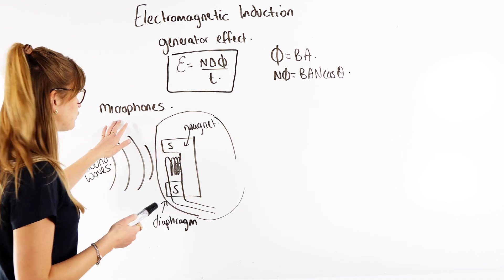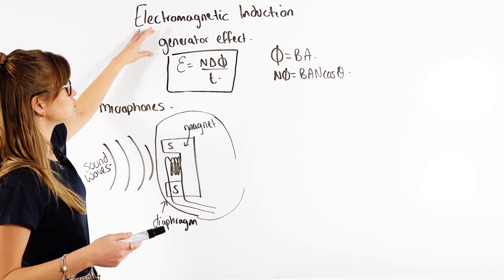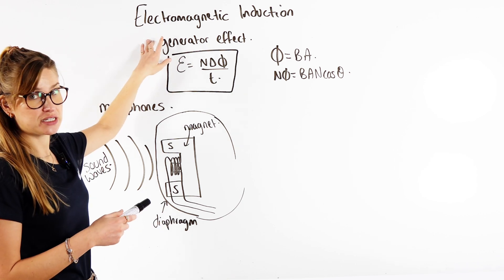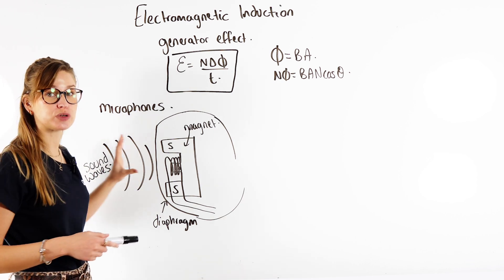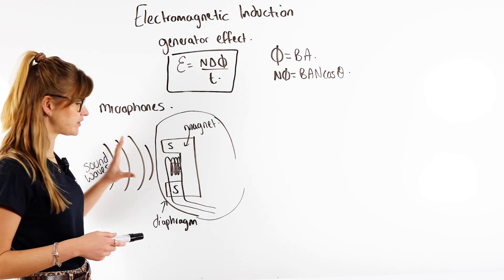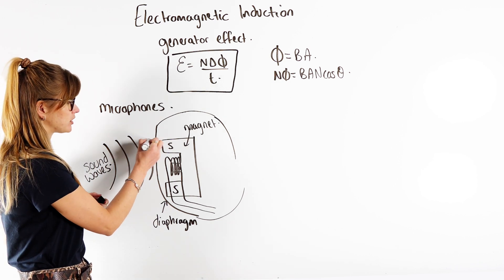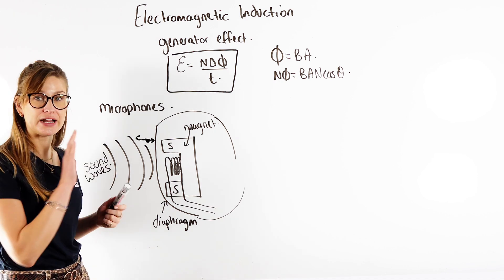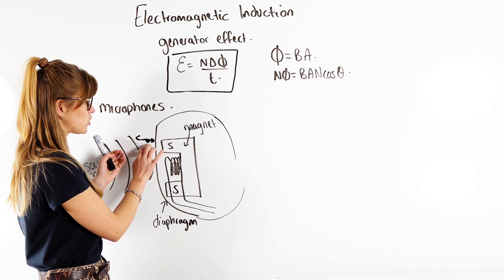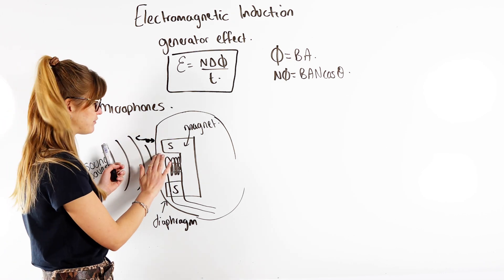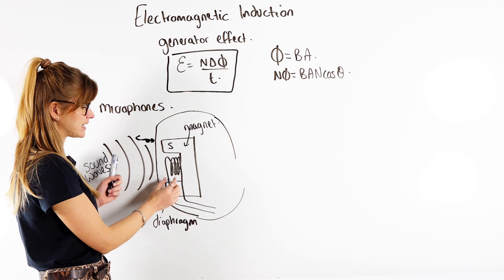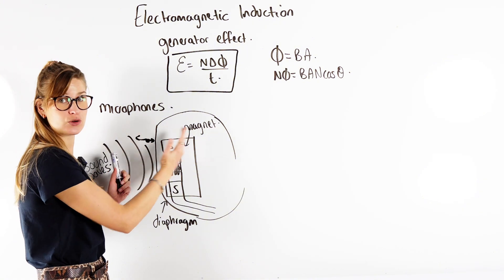One place you'll see electromagnetic induction is in microphones. Microphones use Faraday's law — the generator effect. What happens is you have these sound waves. Remember, sound waves are pressure waves, and the oscillations are parallel to the direction of energy transfer. So we get air particles oscillating parallel to the direction of energy transfer. In a microphone, you've got that outer diaphragm, and when the vibrations hit the diaphragm, they cause it to also oscillate or vibrate.